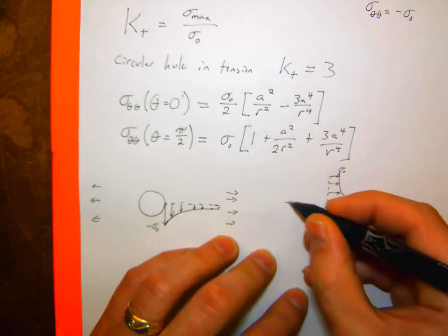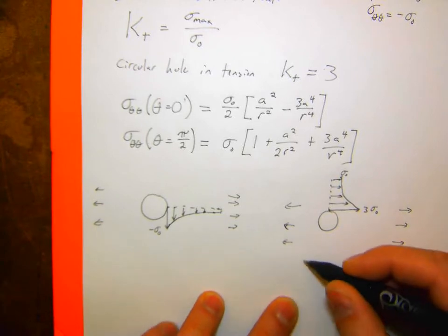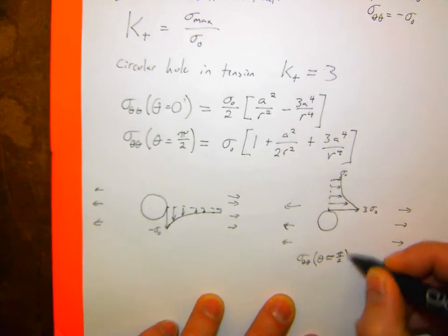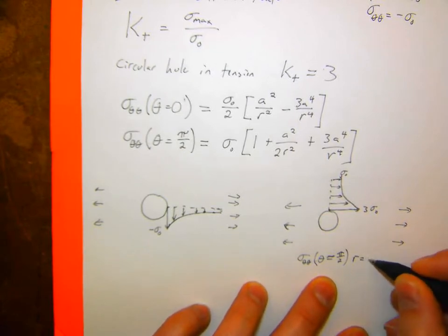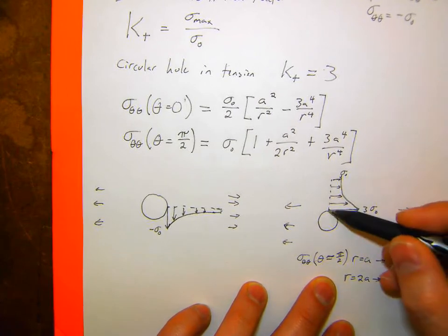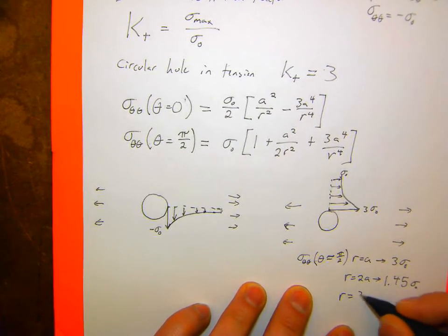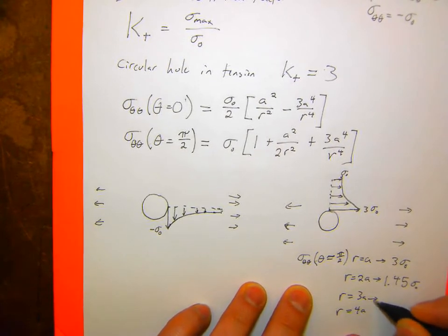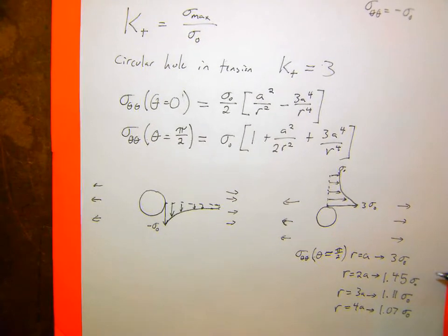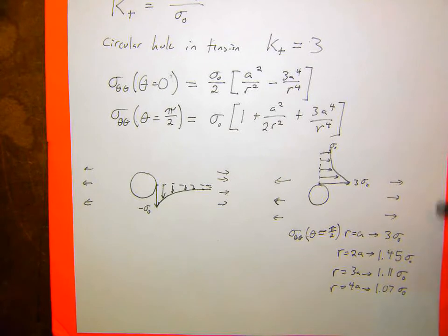So even though it's a fairly high stress concentration near that circle, it drops off relatively quickly based on that r⁴ dependence. At r=2a (twice the radius), it's already down to about 1.45 sigma_naught, at r=3a it's 1.11, and at r=4a it's 1.07 sigma_naught — dropping off pretty fast.